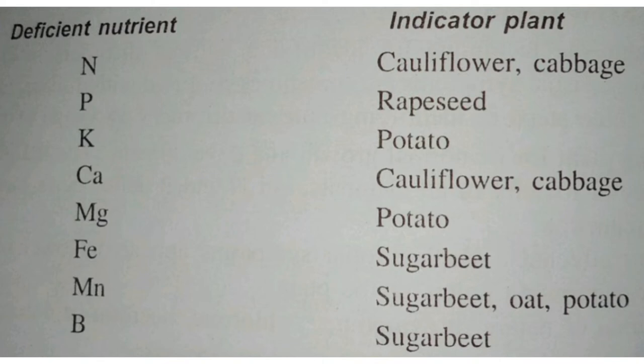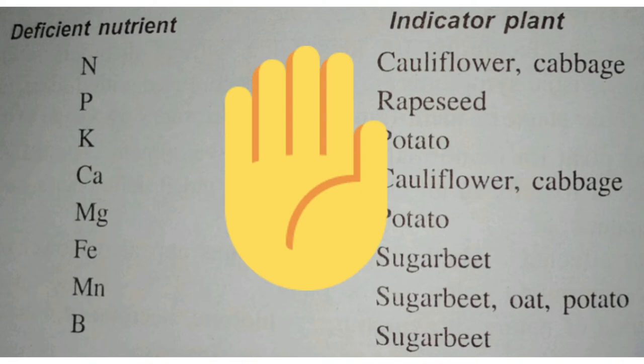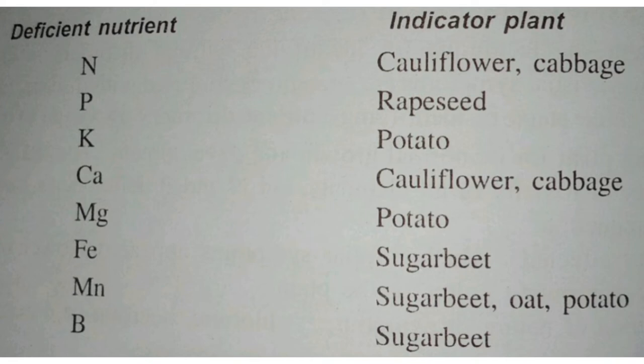K — Potassium — the indicator plant is potato. Remember: P-O-T from potato, P-O-T-A-S from potassium — that's how you link them. Next is Calcium — the indicator plants are cauliflower and cabbage again. Ca, ca, ca — calcium, cauliflower, cabbage — all start with 'ca', easy to remember!